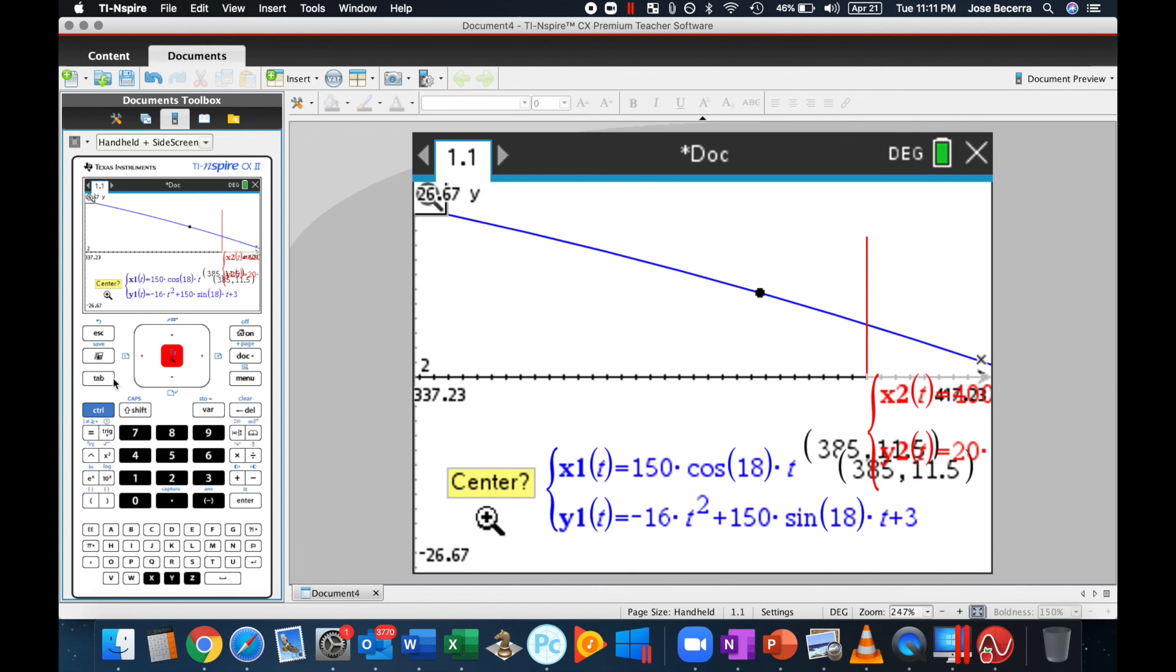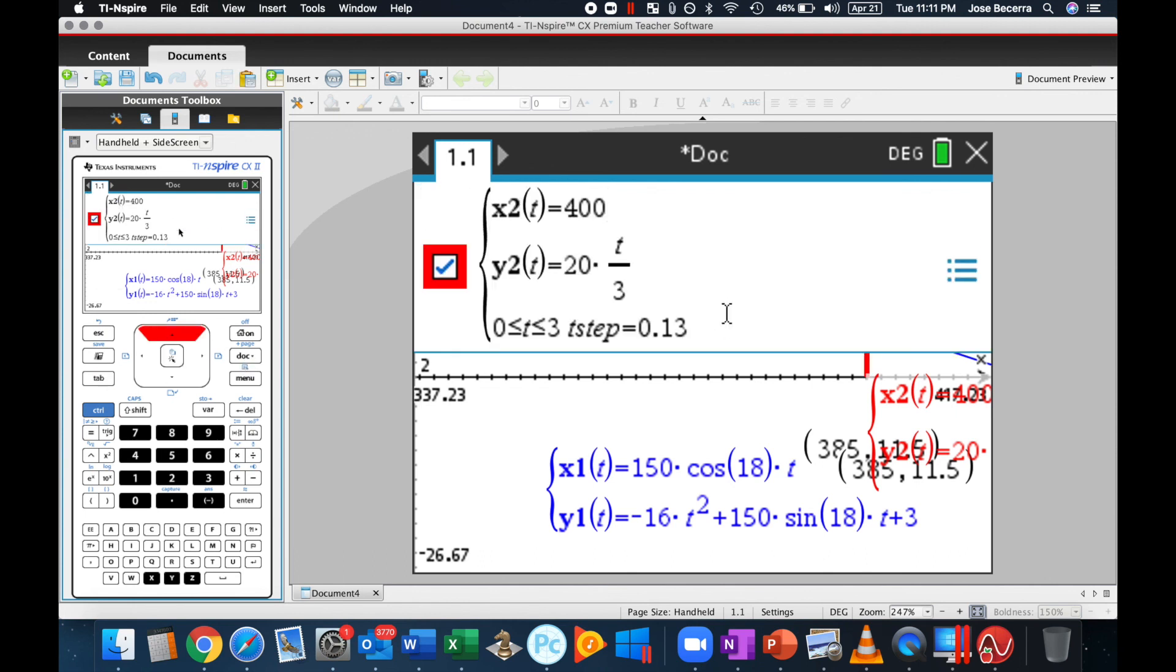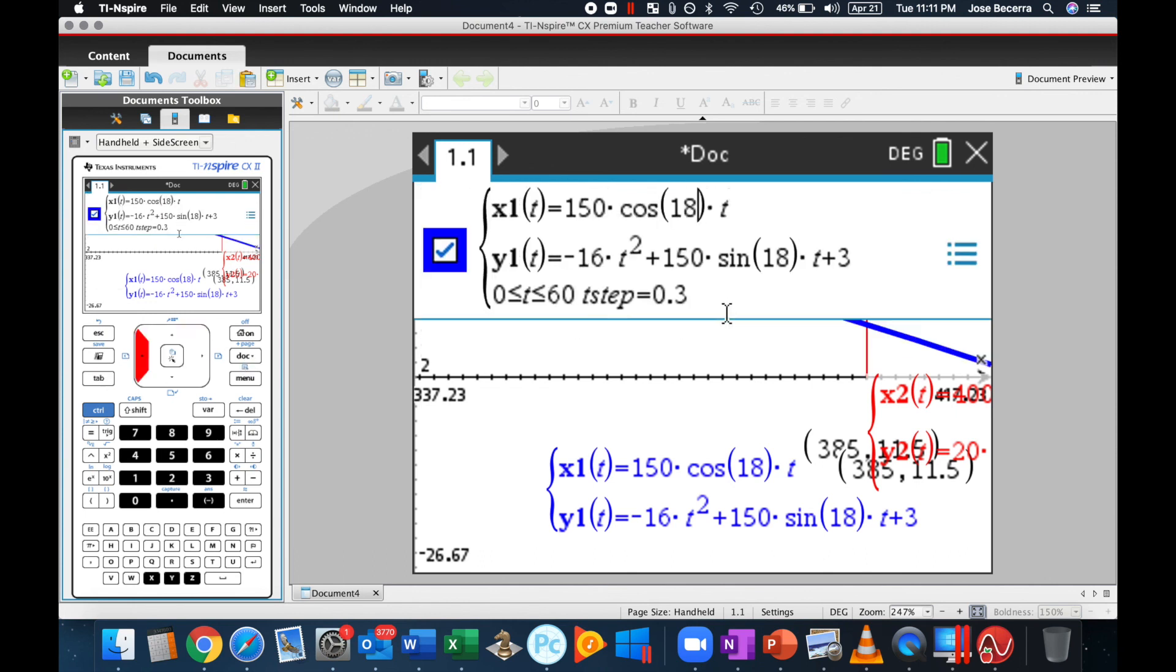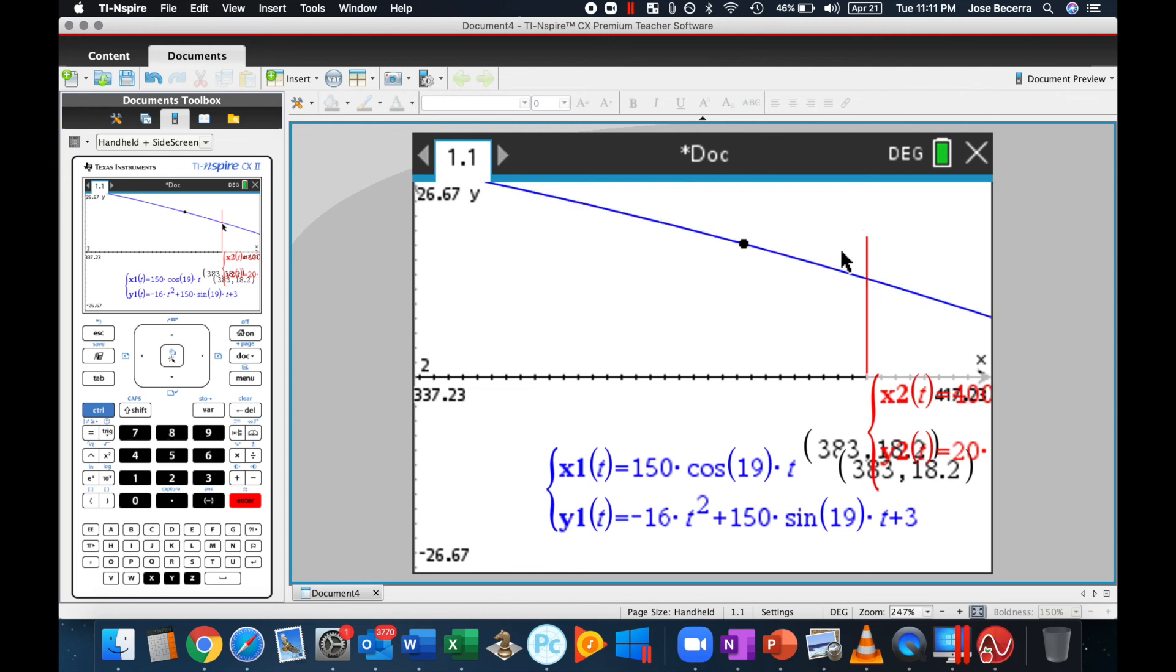I can actually go ahead and change the angle. And let's see if it would clear it if, for example, it was hit at a degree of 19 degrees. And you can see that 19 degrees would also not clear the wall, it would actually run into it as well.